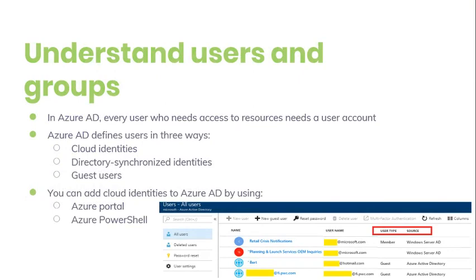Let's move on to understanding users and groups. In Azure AD, all users who require access to resources must have a user account. A user account is a synced AD DS object or an Azure AD user object that contains all the information required to authenticate and authorize the user during the sign-in process and build user tokens. To view Azure AD users, simply access the All Users blade and notice the user type and member columns.